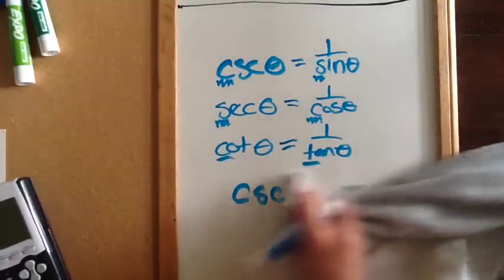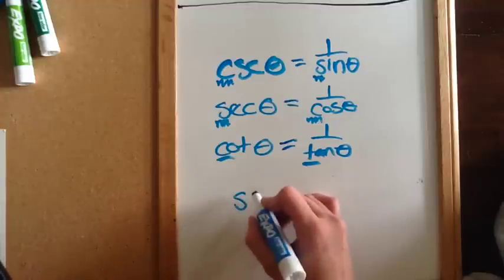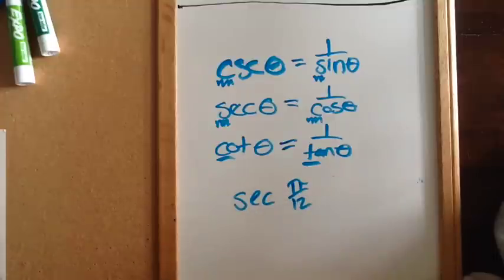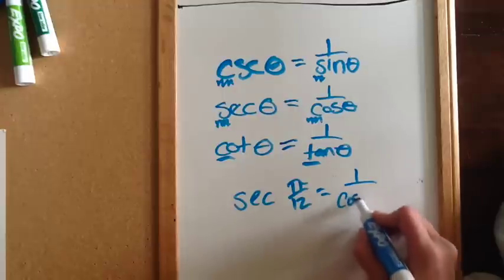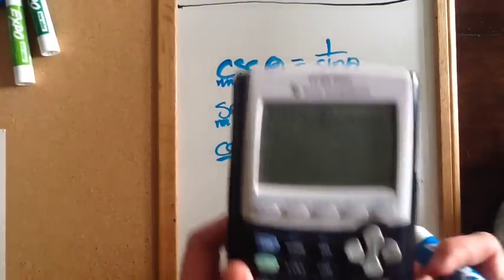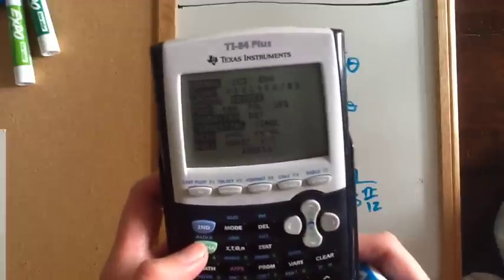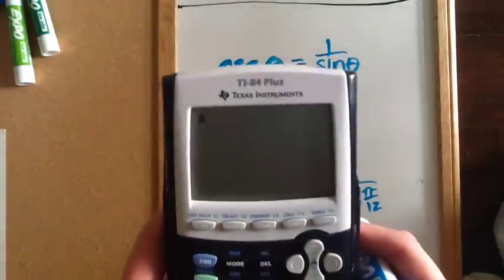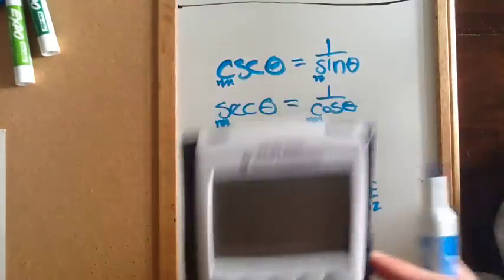Now, if I wanted the secant of pi-twelfths, in the calculator I have to use the reciprocal function, so I'm going to do 1 over the cosine of pi-twelfths. This is in radians, so I have to go back to my mode, and I'm going to go down and hit enter on radian. Then I'm going to go back to my home screen, and I'm going to do, just like we have here, 1 divided by cosine of pi-twelfths.